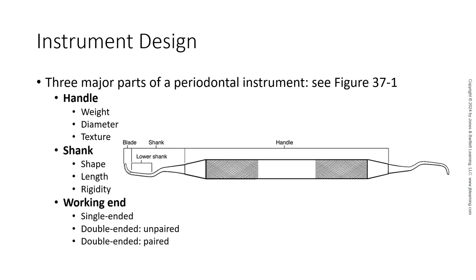There are three major parts of a periodontal instrument: the handle, the shank, and the working end. You can see that on this picture here. The handle comes in various forms. The thicker the handle, the better at reducing musculoskeletal disorders on the hand and the wrist.